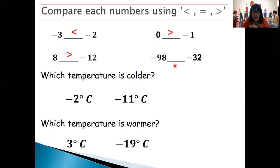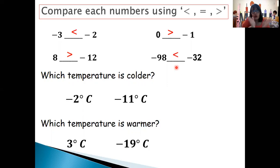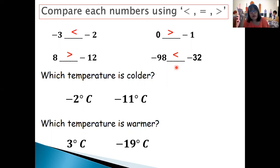Now, what is your answer for negative eight compared to negative 32 — is it lesser or greater? Check your answer. Yes, you're correct. Very good. Negative 98 is less than negative 32. Why? Because negative 98 is farther away from zero compared to negative 32. Negative 32 is closer to zero than negative 98. Is that clear? Very good.